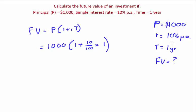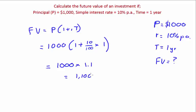The rate and time are already in the same units, so no conversion needed. FV = 1,000 × (1 + 0.1) = 1,000 × 1.1 = $1,100. Your future value is $1,100. I hope this video is clear and I hope you learned lots — thank you.